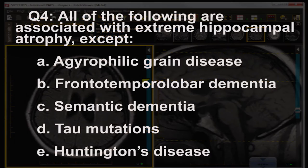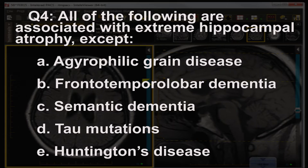Question four: all of the following are associated with extreme hippocampal atrophy, except: A, argyrophilic grain disease; B, frontotemporal lobar dementia; C, semantic dementia; D, tau mutation abnormalities; or E, Huntington's disease.